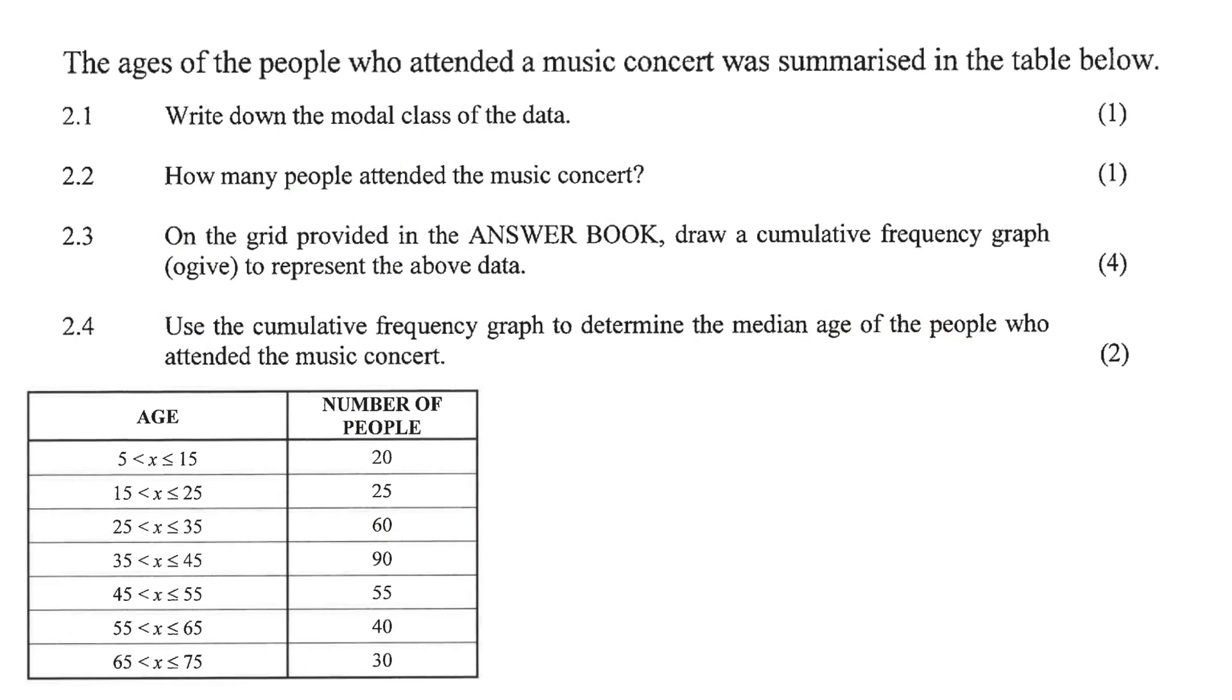The ages of people who attended a music concert was summarized in the table below. So we've got a whole bunch of people at a music concert. For example, there were people between the ages of 5 and 15, there were 20 of those people. Between the ages of 15 and 25, there were 25 of those people.